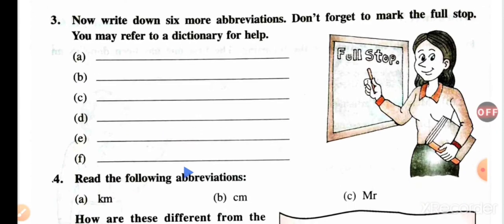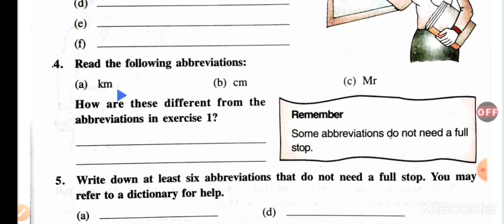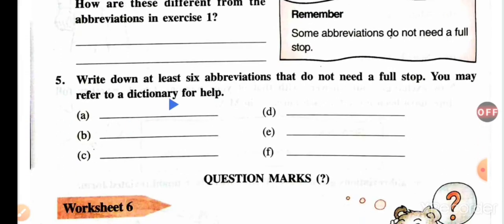Now read the following abbreviations: km, cm, Mr. Some abbreviations do not need a full stop. How are these different from the abbreviations in exercise one? Well-known abbreviations like km, cm, Mr do not need a full stop. Write down at least six abbreviations that do not need a full stop — you may refer to a dictionary for help. Examples: mg, mm, L (liter), kg, rupees (Rs).